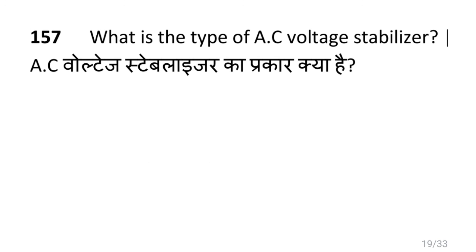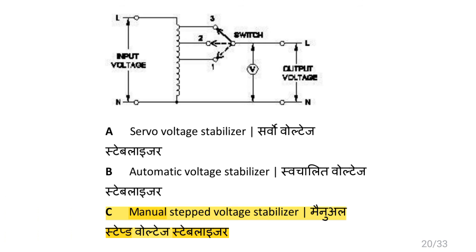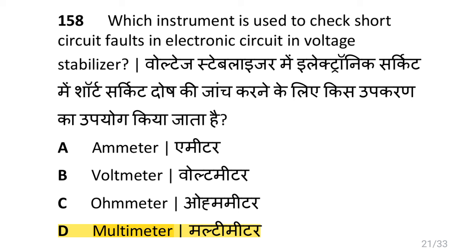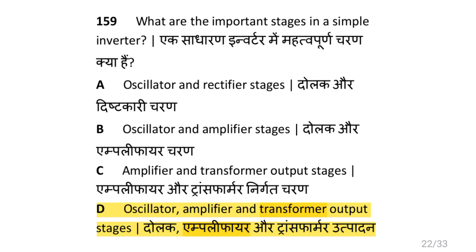What is the type of AC voltage stabilizer? i.e. manual step voltage stabilizer. Which instrument is used to check short circuit faults in an electronic circuit in a voltage stabilizer? i.e. multimeter. What are the important stages in a simple inverter? i.e. oscillator, amplifier, and transformer output stages.